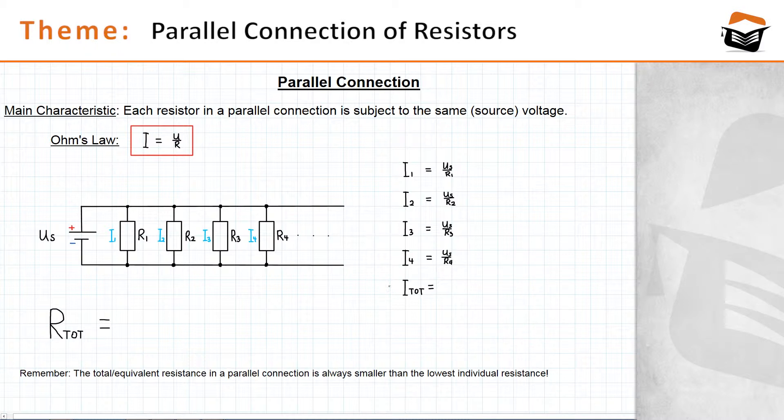Now, the total current is simply the sum of all individual currents. That's because if you have four different currents flowing through each resistor, it must be true that the sum of these currents is the current that is drawn from the voltage source. So I total is equal to I1 plus I2 plus I3 plus I4.